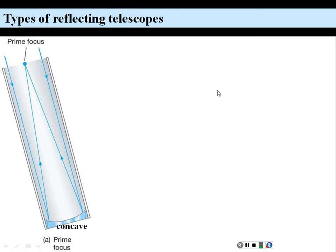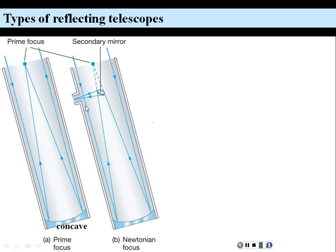For optical viewing, putting your head at the prime focus is not ideal. Newton's modification was to add a flat secondary mirror at a 45-degree angle. The light coming in, which was heading toward the prime focus, is redirected perpendicularly toward an eyepiece and your eye. This is called the Newtonian focus.